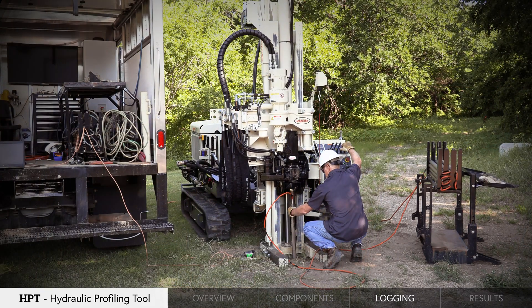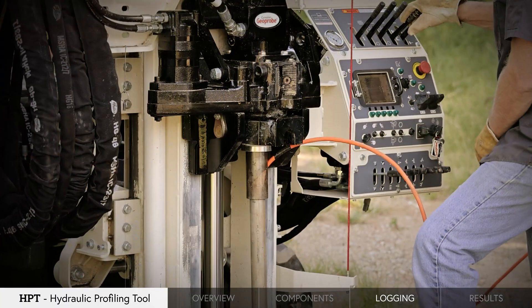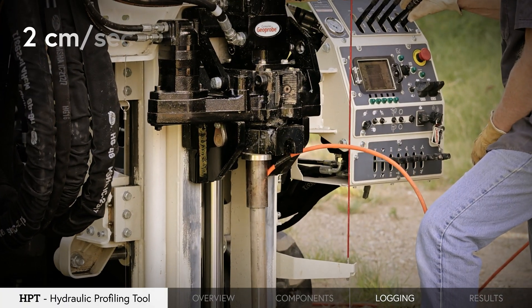Once the HPT screen is at the ground surface, the trigger button in the software can be clicked. The probe is advanced at a rate of 2 centimeters per second.